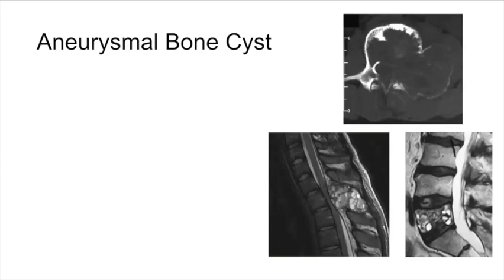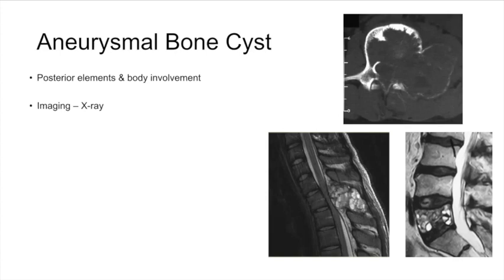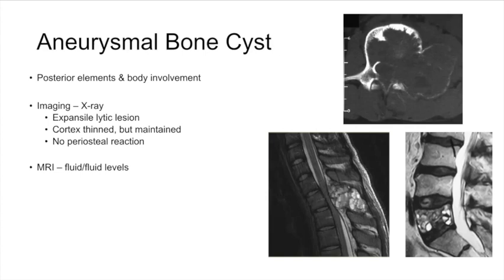Aneurysmal bone cysts (ABCs) are very similar to those in the extremities. MRI shows classic fluid-fluid levels, and CT scans show an aggressive appearance with cortical scalloping. With ABCs, you have to think about alternative, more malignant etiologies such as angiosarcoma. They are mainly in the posterior elements, though they can involve the anterior column and can cross the midline.